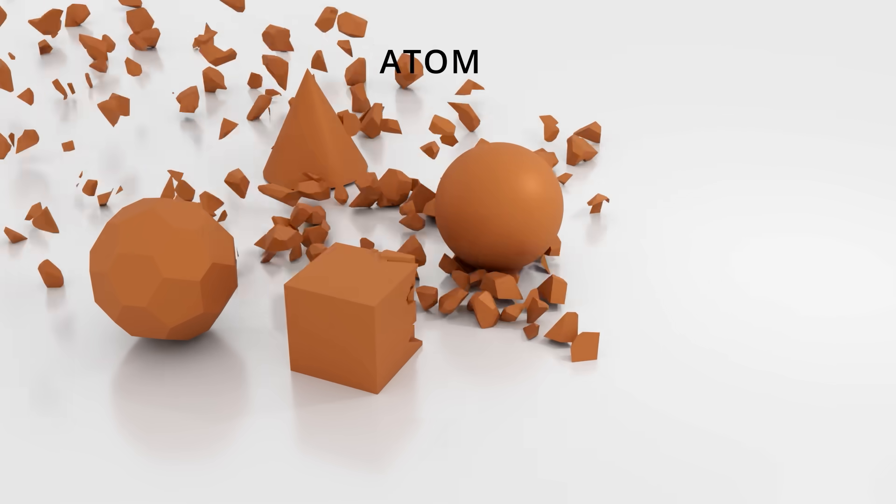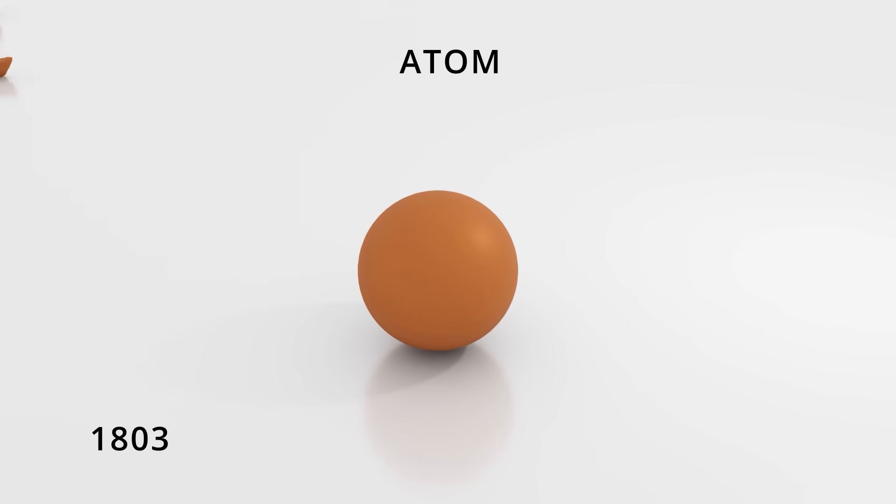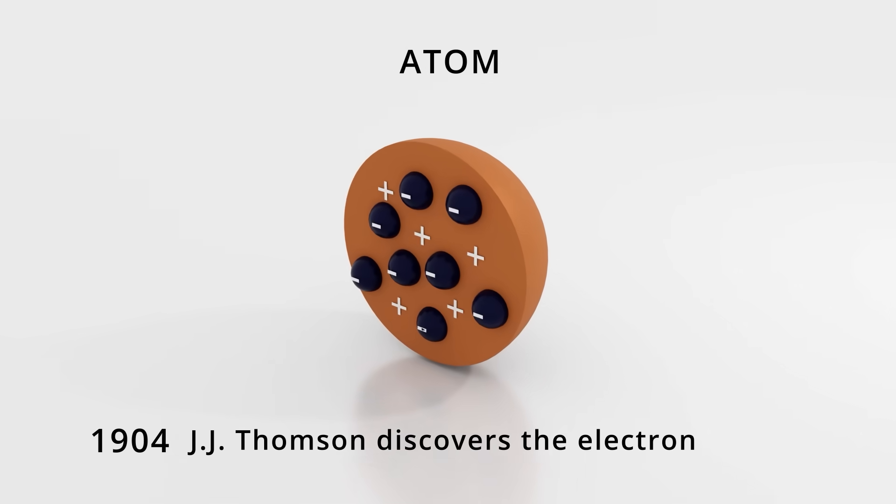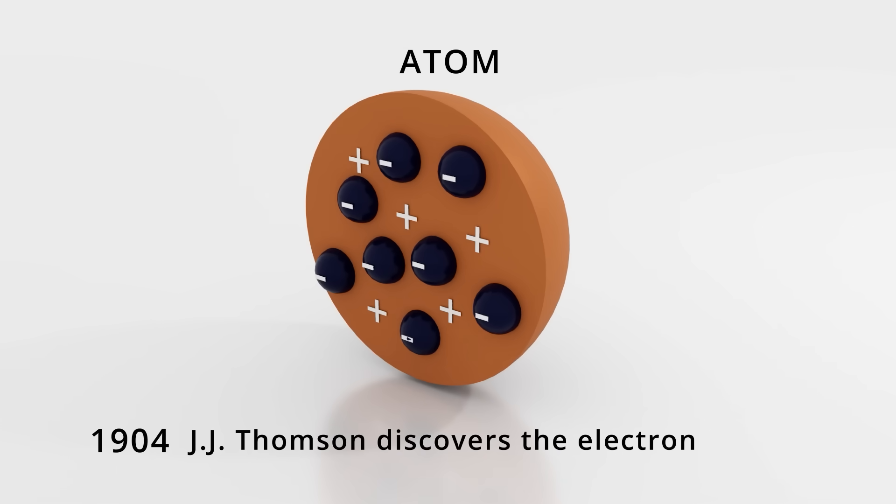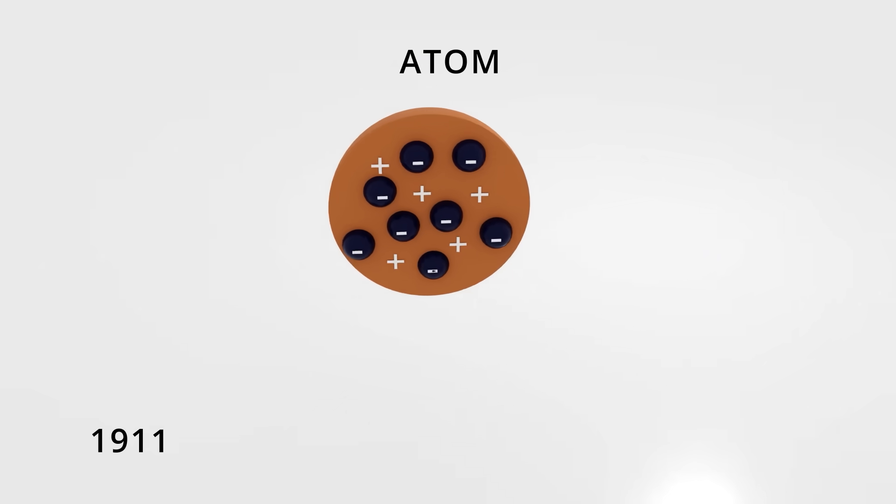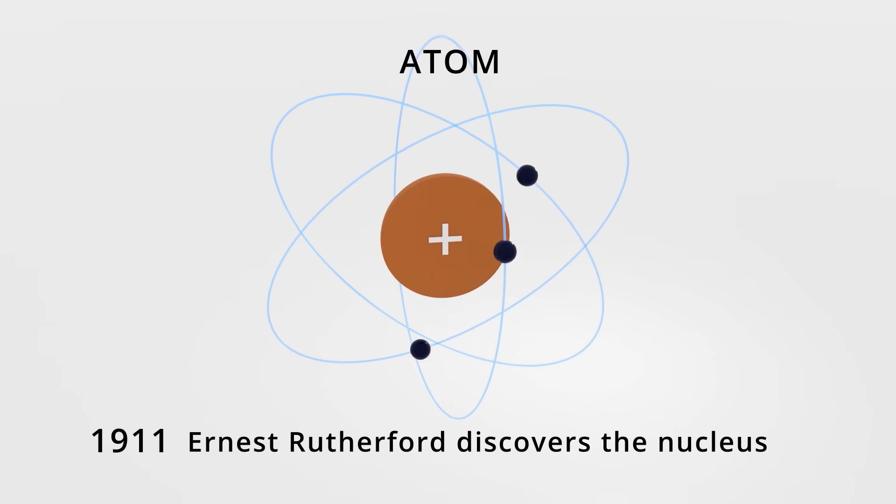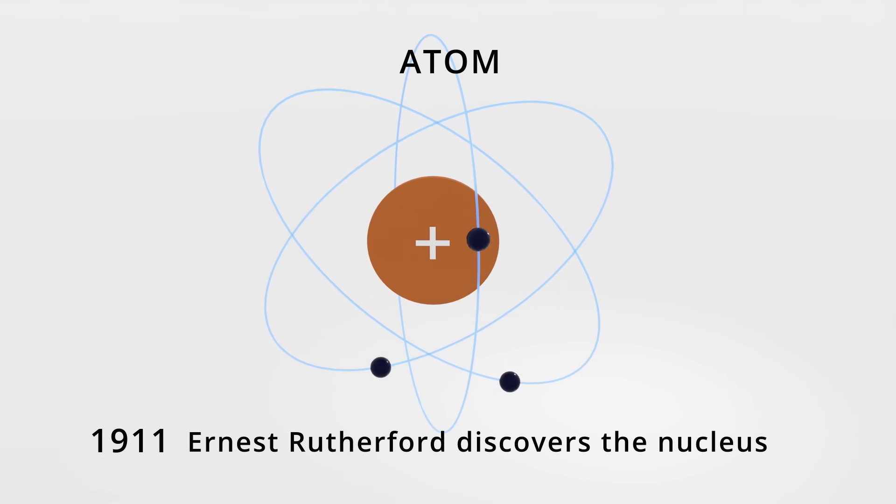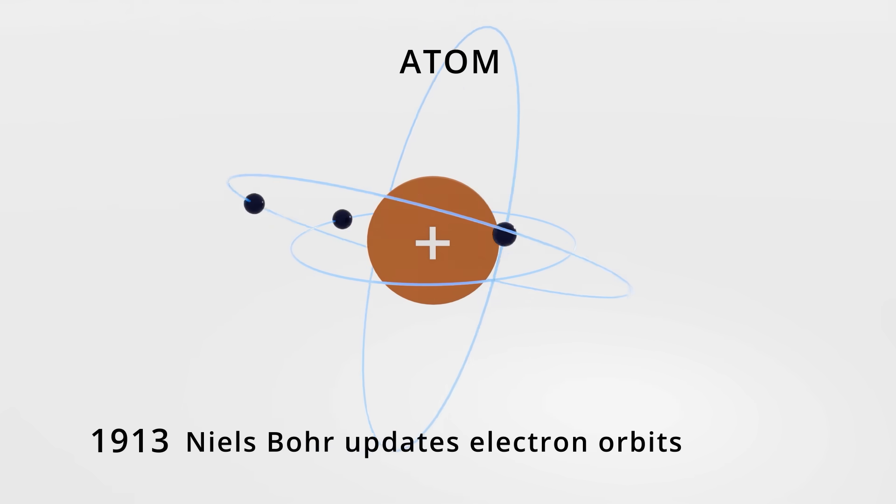Over two millennia later, these shapes were unified into solid spheres. Around 1900, the electron was discovered, which was proposed to exist scattered within the sphere. A few years later, the nucleus was discovered, and the model evolved to electrons traveling in fixed orbits around the nucleus.